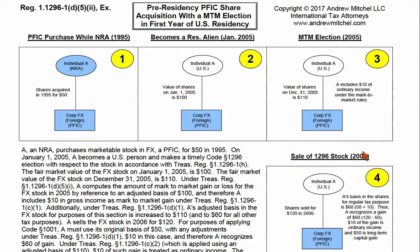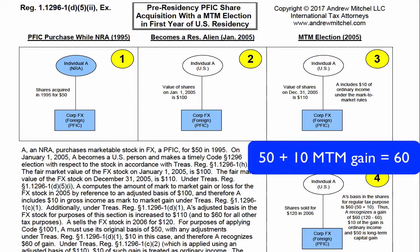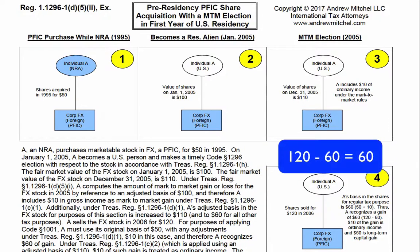In 2006, A sells the shares of FX for $120. For purposes of applying the normal gain or loss rules under Section 1001, A must use the basis of $60 — the original $50 plus the $10 of mark-to-market gain. Therefore, A recognizes a gain of $60.